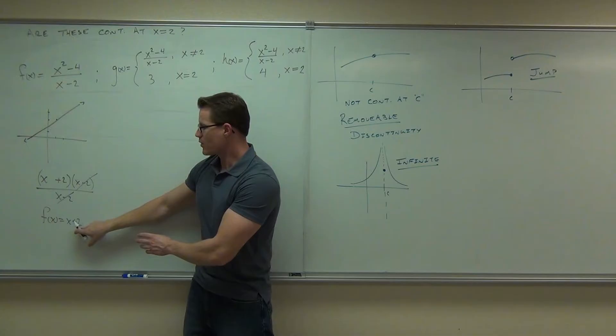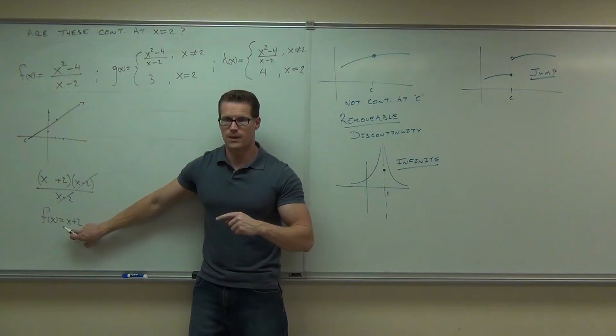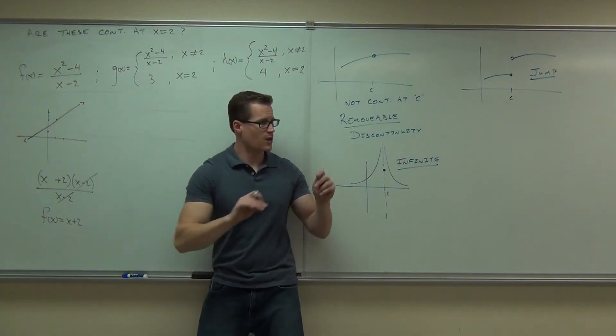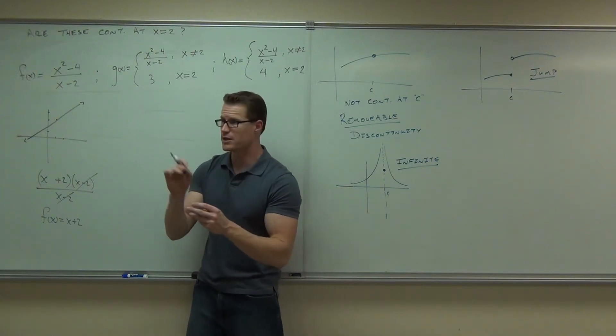What this says is, if I were able to plug in 2, if I were able to plug in 2, what would I get out of it? 4. Now, am I able to plug in 2? No. So what that says is, if I were able to plug in 2 and I got out 4, I have a hole at 2, 4.